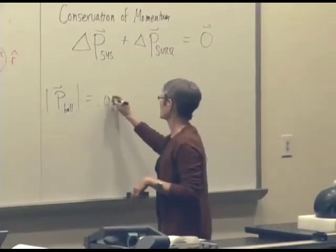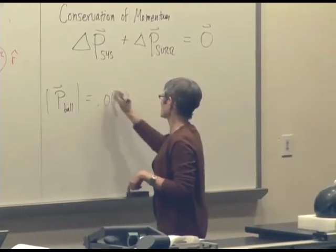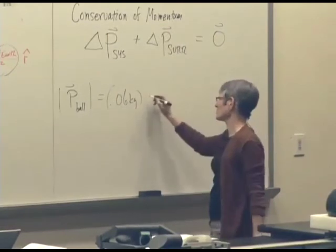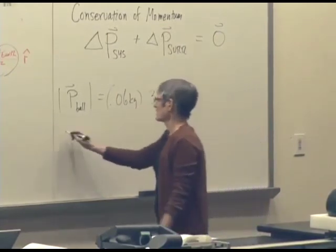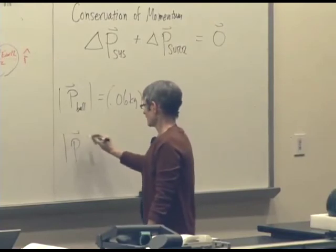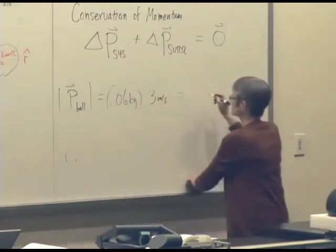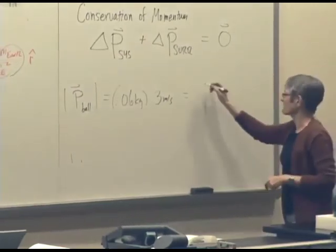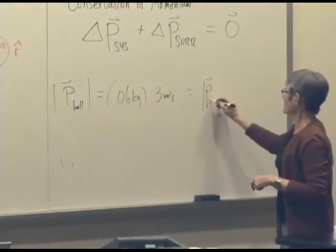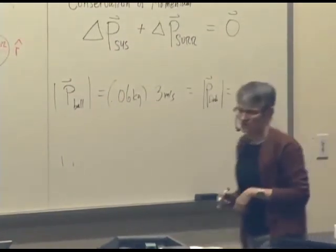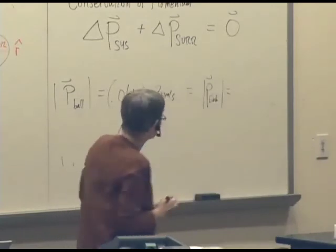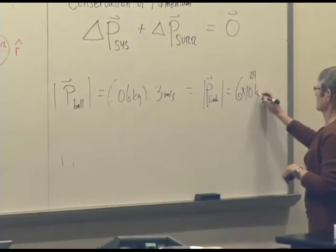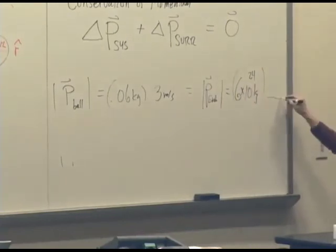Which is going to be equal in magnitude to, if you assume they both start from rest, so they're both speeding up toward each other. The magnitude of the momentum of the earth, which is, well, what's the mass of the earth? It's 6 times 10 to the 24th kilograms. So, what's the speed of the earth going to be?